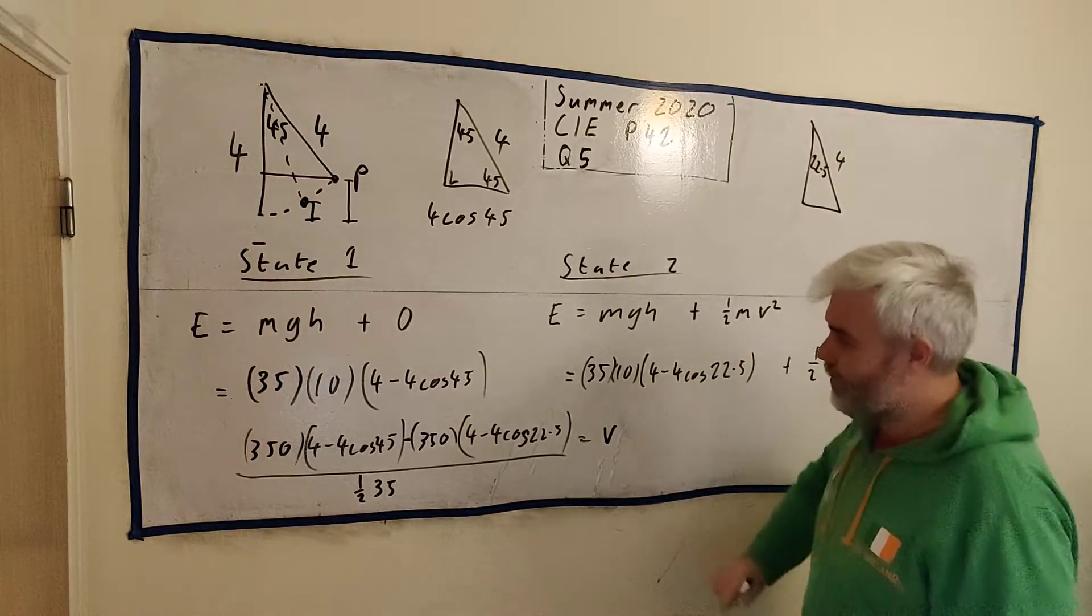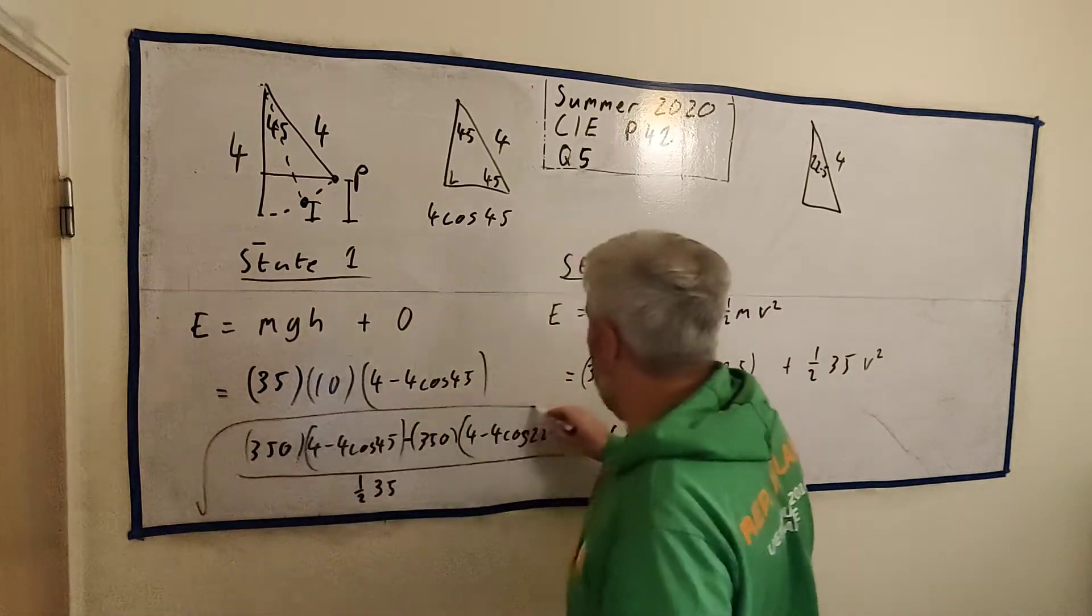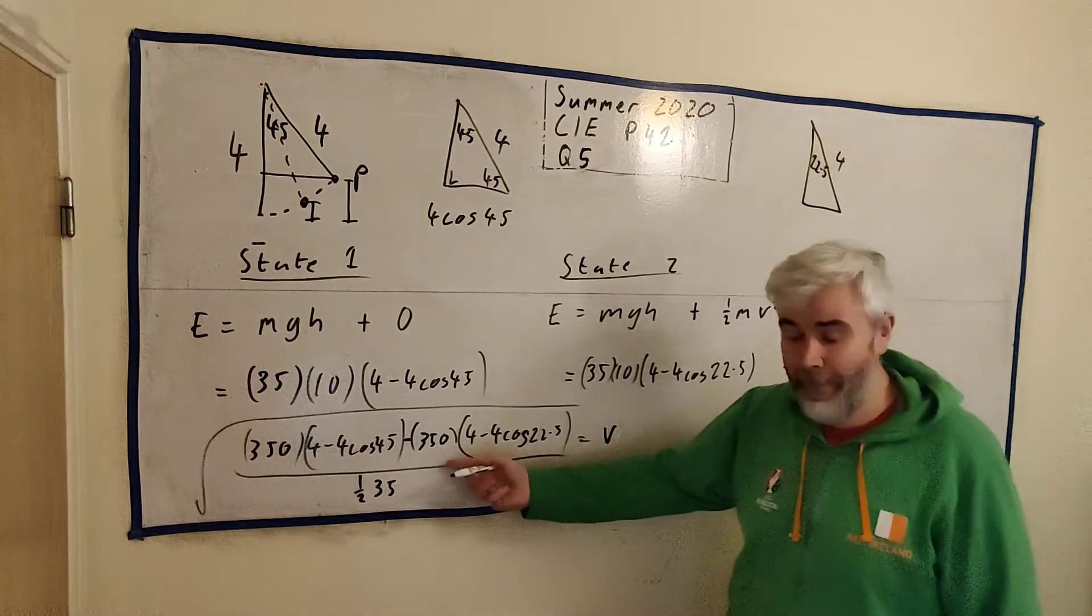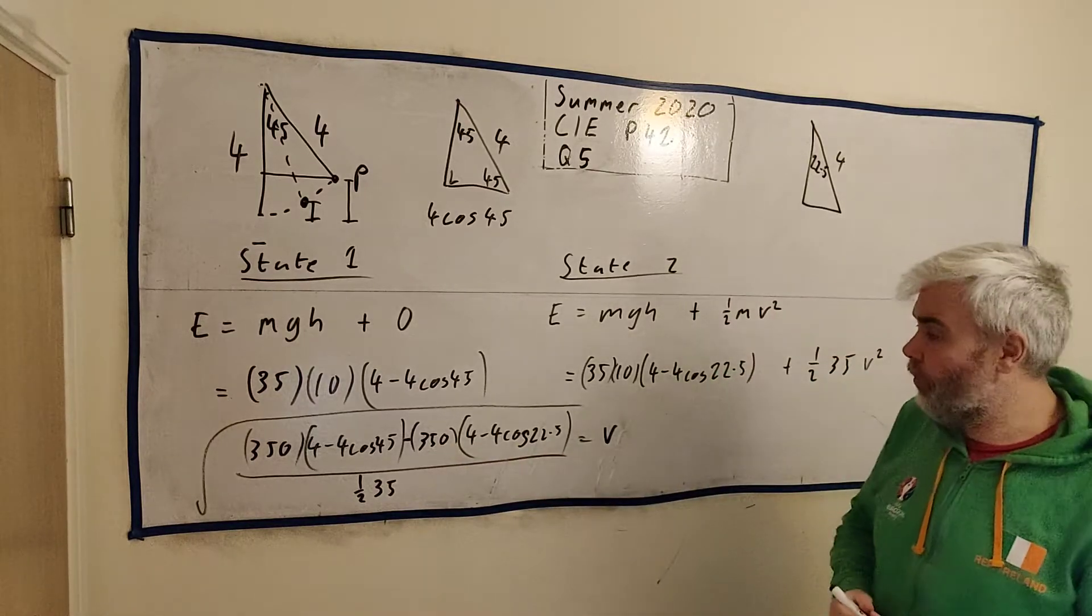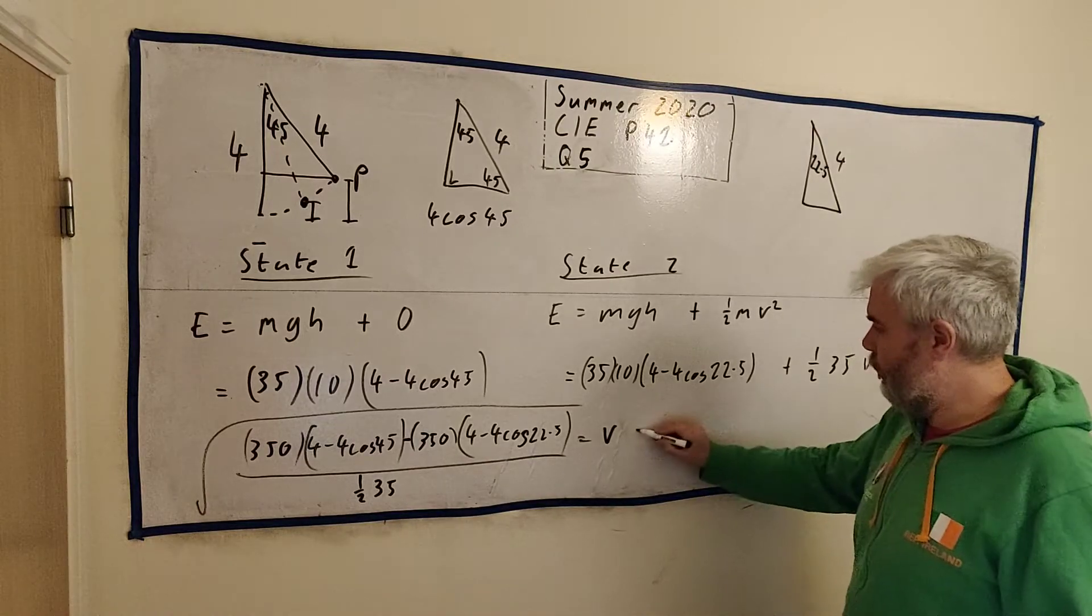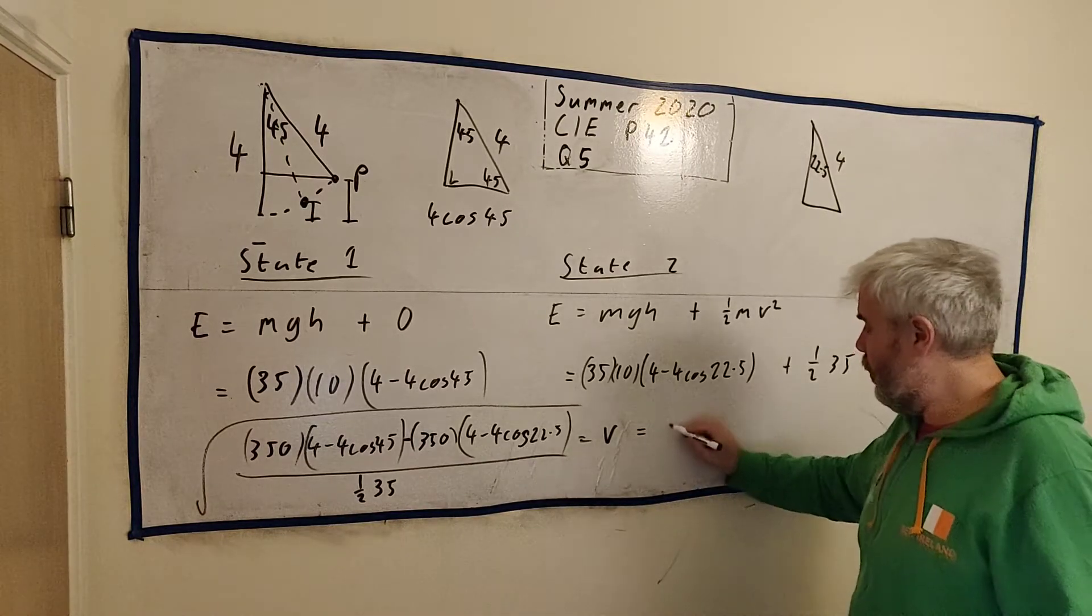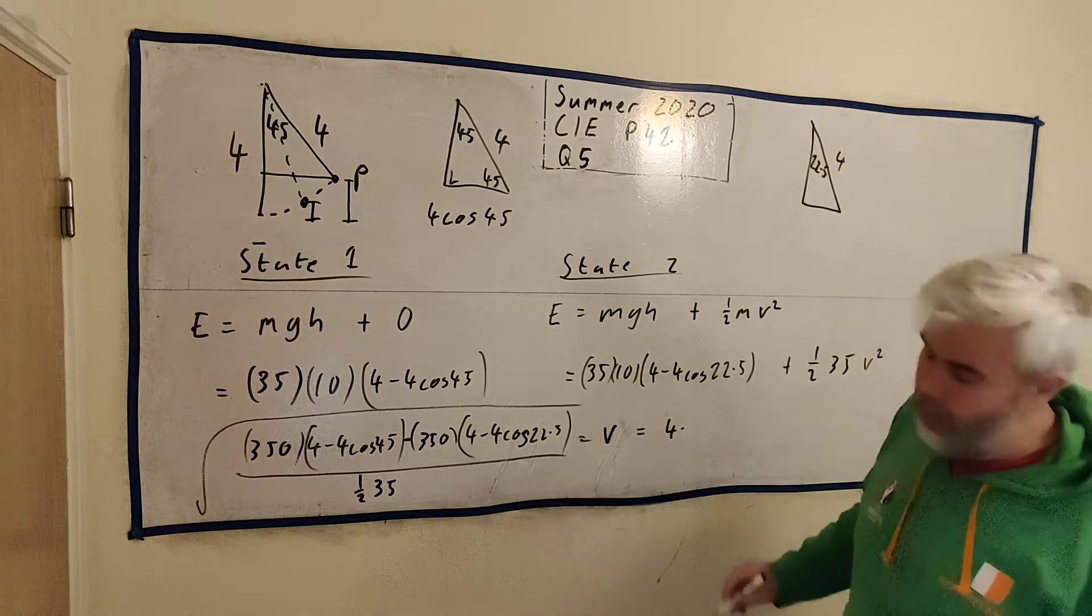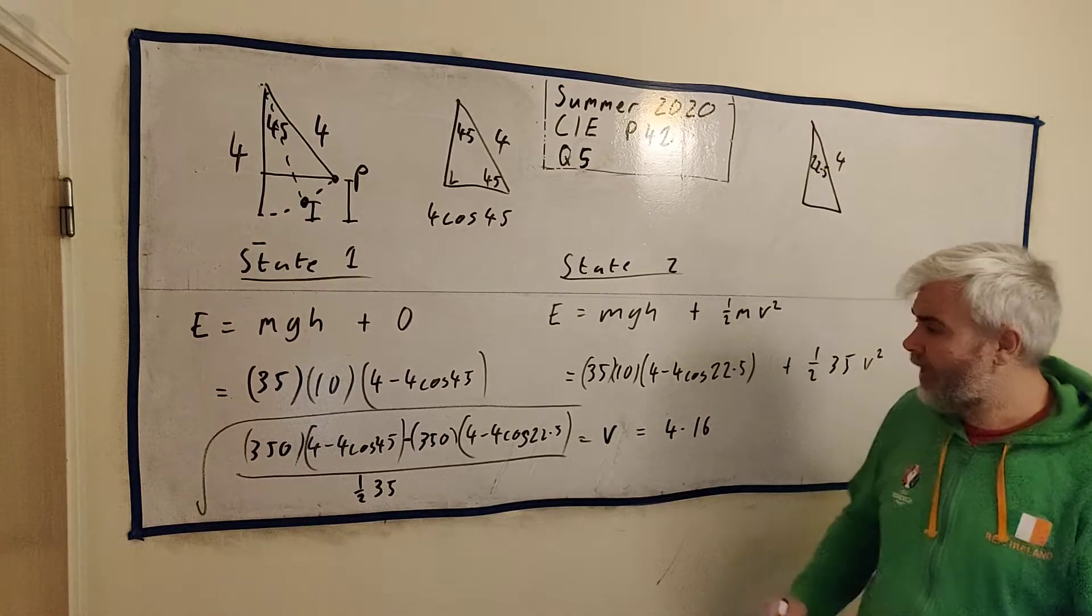Minus this one, 350 times 4 minus 4 cosine 22.5. And then all divided by a half multiplied by 35. So all divided by a half multiplied by 35. And that's equal to V squared. I just rearranged this equation. Or let's save me writing any of that again. Square root of all of that. It's a bit of a mess, but these are just normal numbers. You can go ahead and put it into a calculator. And we will get to three significant figures, 4.16.